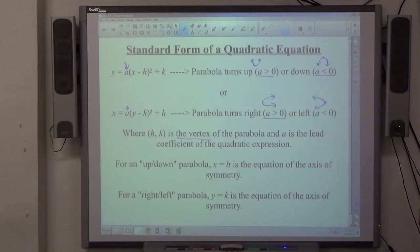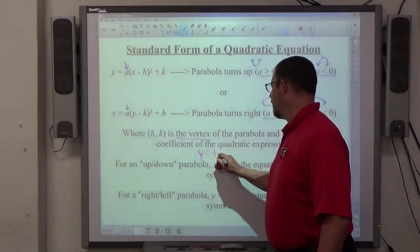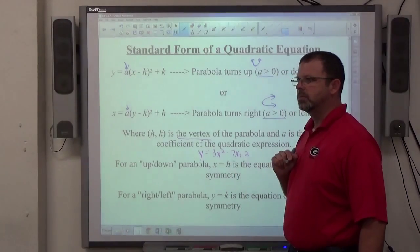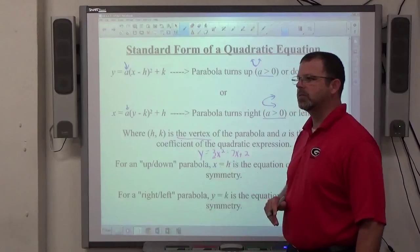And a is the lead coefficient of the quadratic expression. So, for example, if I have y equals 3x squared minus 7x plus 2, a equals 3. It's the number in front of the highest power of the term.